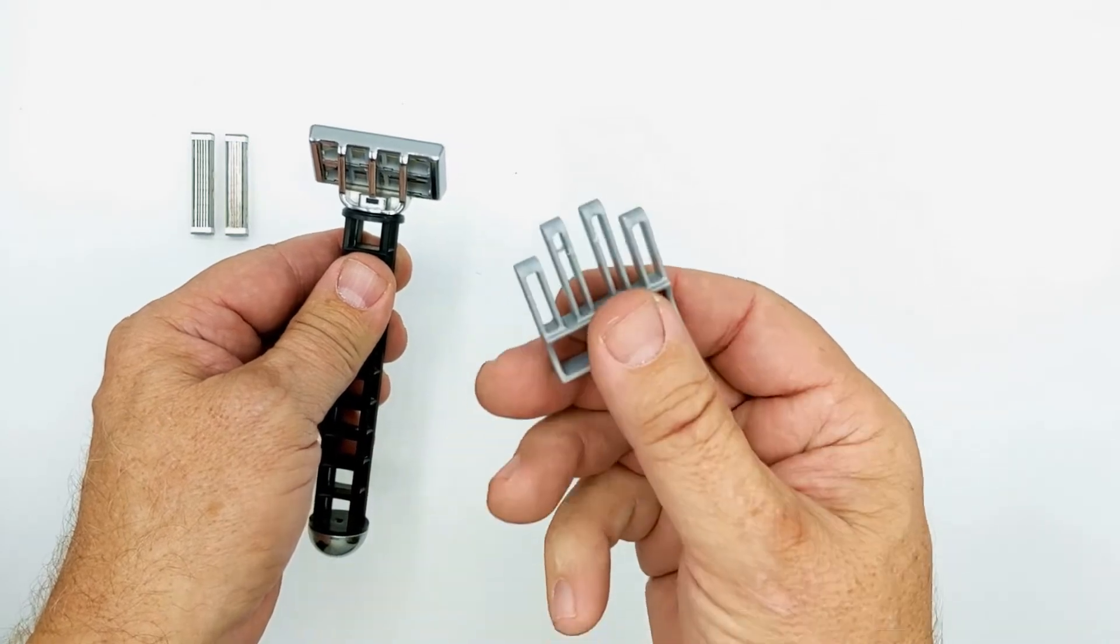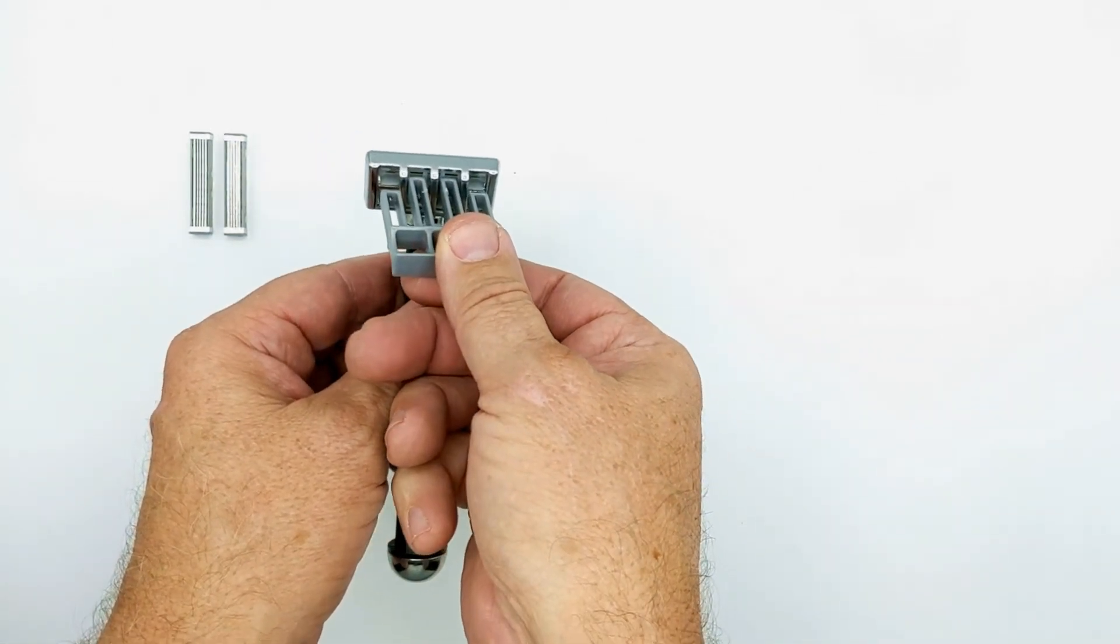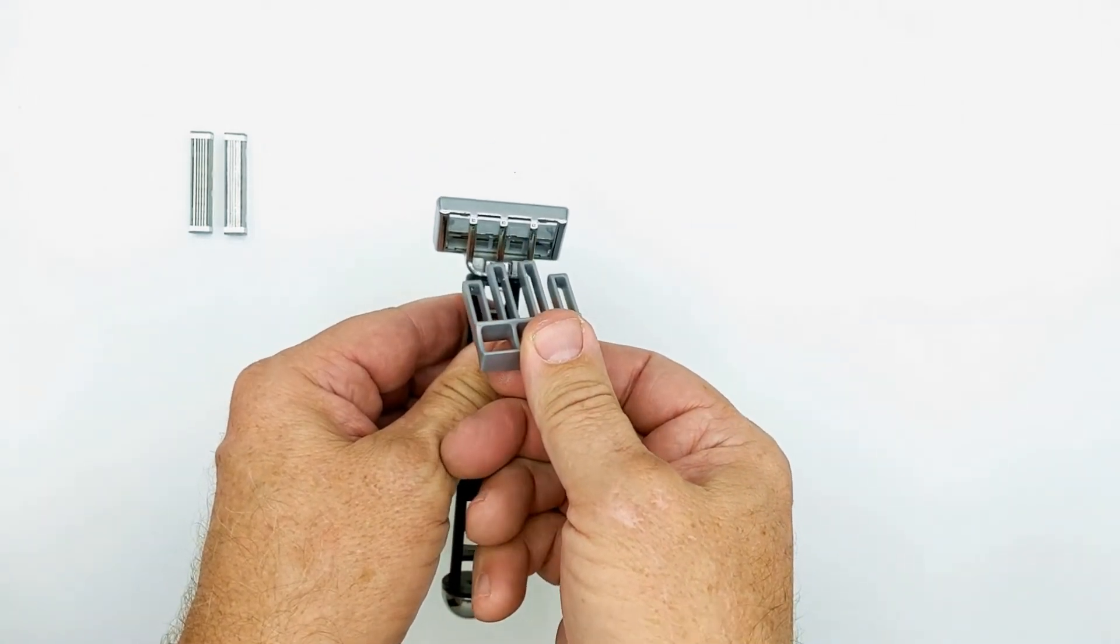Then you're going to take the cartridge removal tool and place it in between the three supports on the rear of the Omni Shaver and push. That will eject the cartridges.